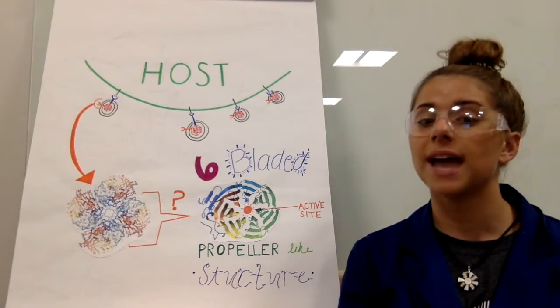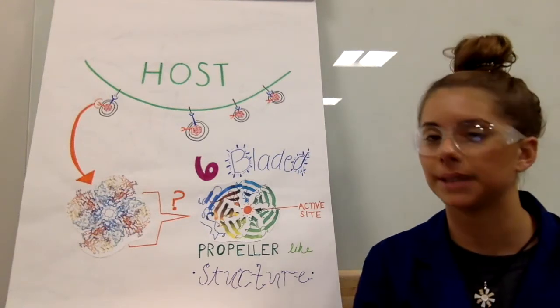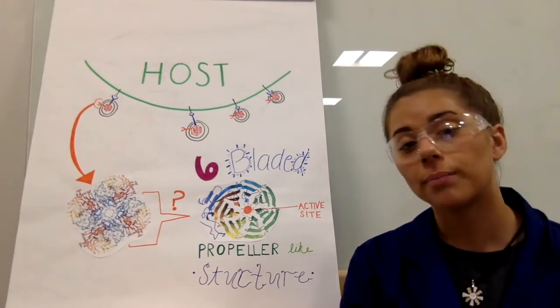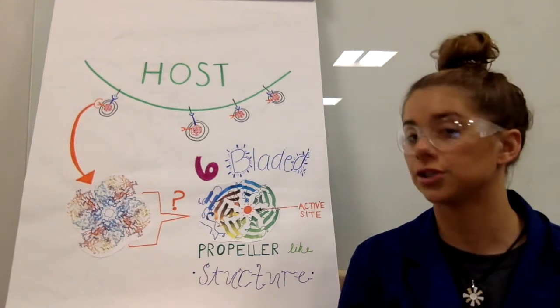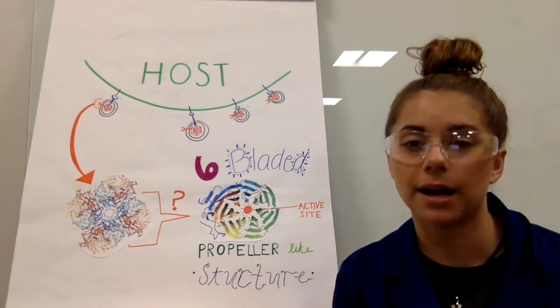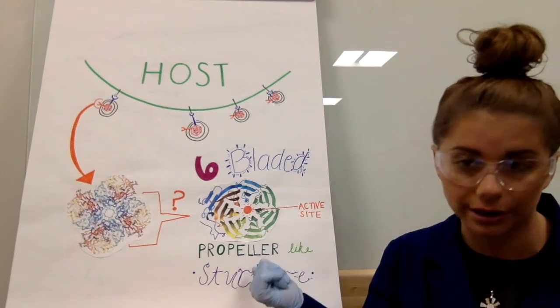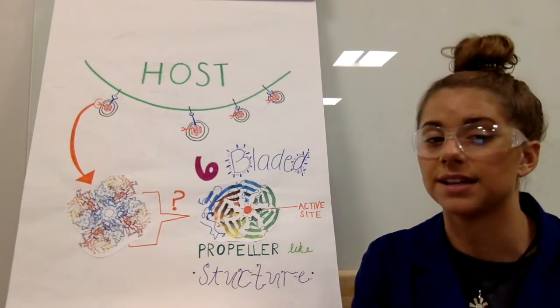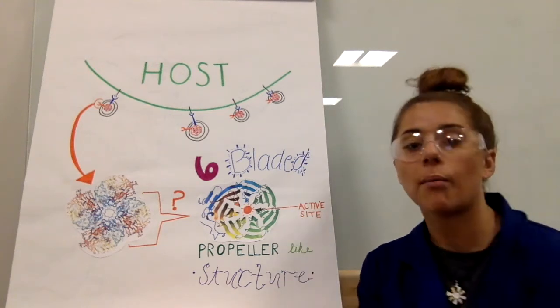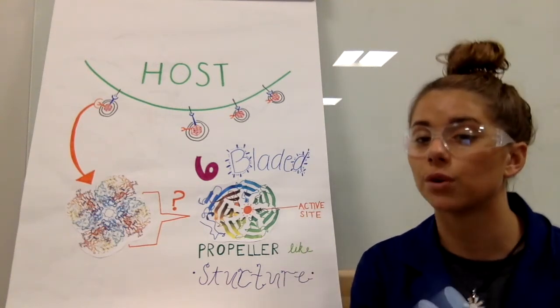Each subunit that forms the head of the mushroom is made up of a six-bladed propeller-like structure, formed by four anti-parallel strands of a beta structure. A beta propeller is categorized by beta sheets arranged in a manner around a central axis, as shown here. The enzyme's active site is in the hole in the middle, formed by the loops connecting the successive four-sheet motifs.